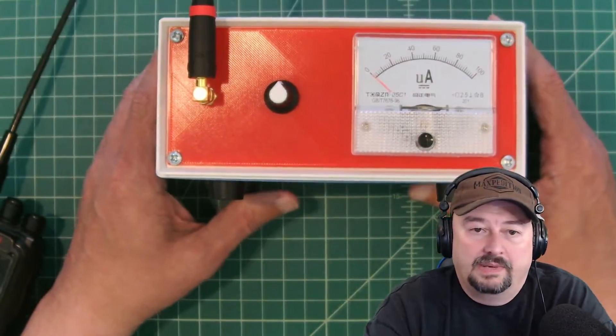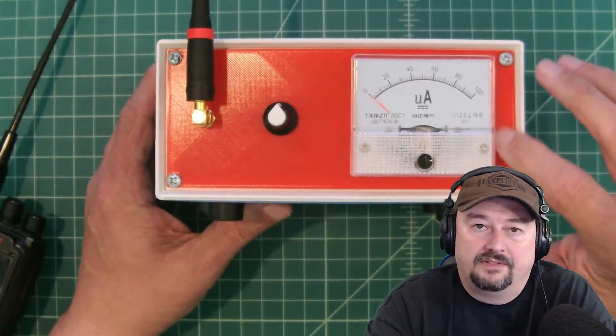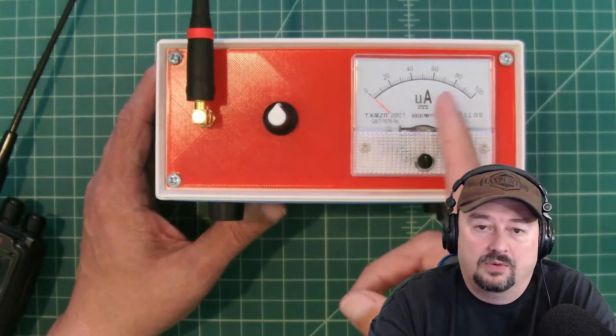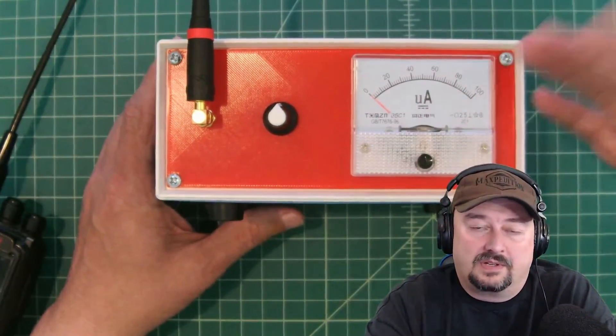All right, so let's talk a little bit about what this meter is and what it does. It's called a relative field strength meter. It will show you on a gauge the strength of your signal.